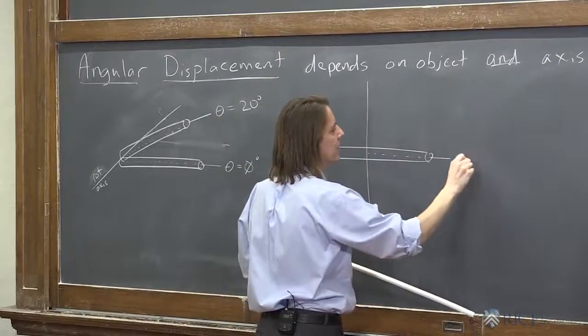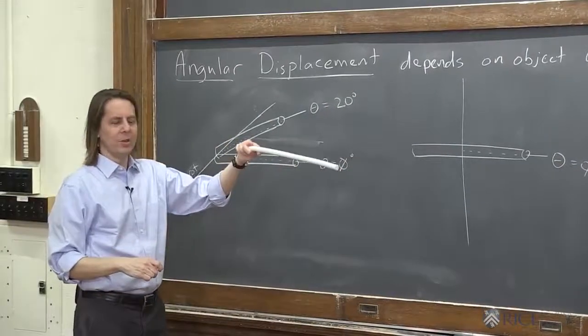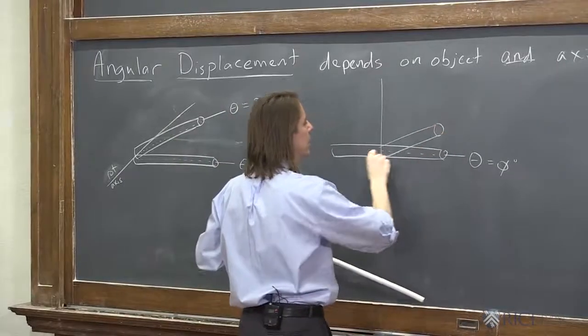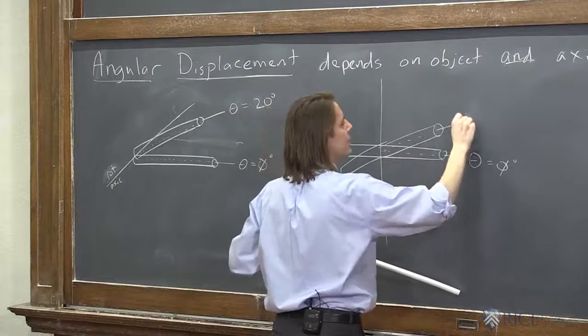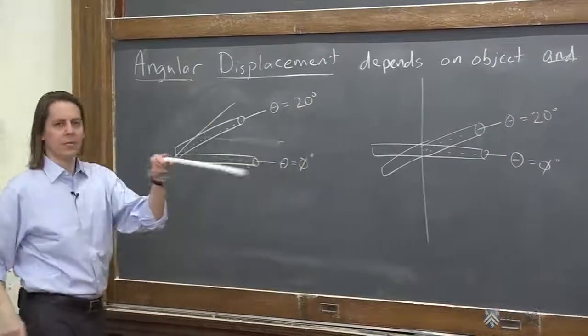then we could draw it just flat like this and call that 0. All right, so there's theta equals 0 degrees. And then if we just turn it in and out of the page a little bit, I'll kind of tilt it so you can see it. It could go kind of like that, like that. And then this theta, maybe it's 20 degrees.